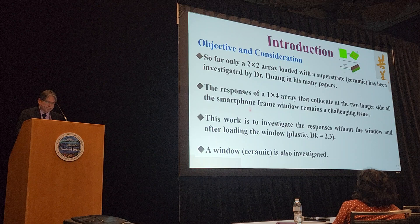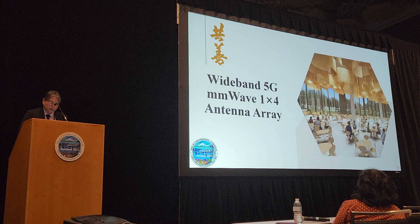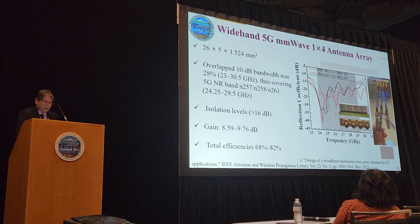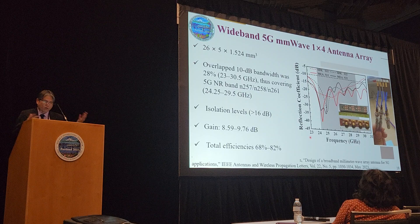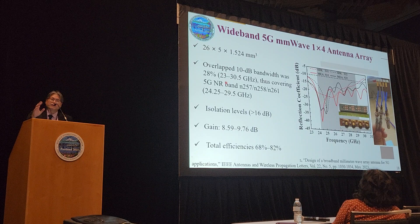When we investigated this, we tried to examine the case with and without the window, then tried to resolve the problem by putting a certain kind of ceramic on top. Here is my previous work published this May. The size of the antenna is quite small overall: 1x4, approximately 26x5 mm, with a width of about 5 mm, and an overlapped 10 dB bandwidth of 28%, which can cover the entire 5G millimeter wave band.